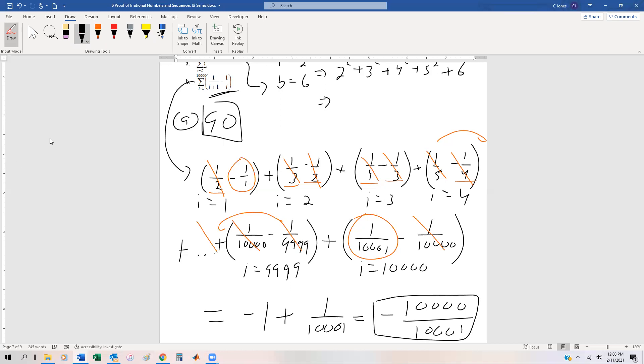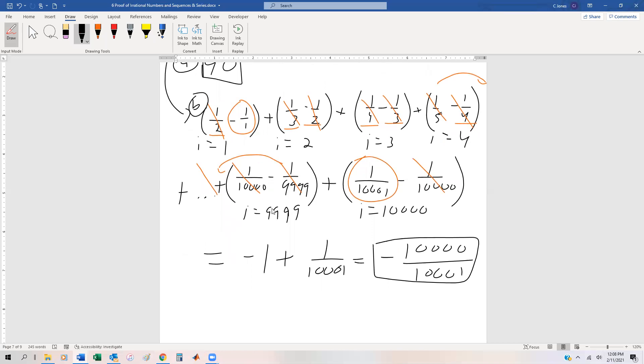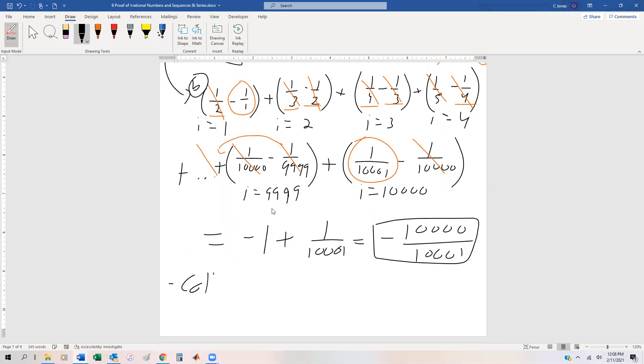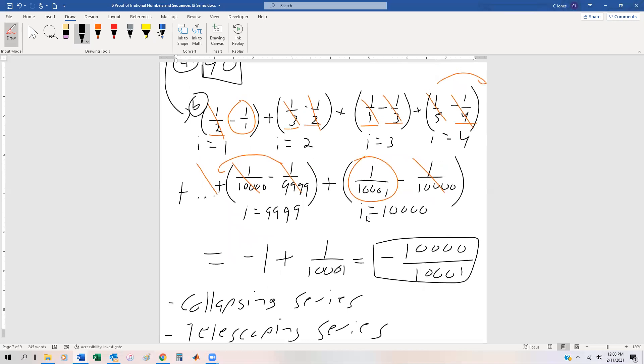So that type of series in which the terms cancel each other out is called either a collapsing series, and sometimes it's called a telescoping series. These types of series do come up quite often in discrete mathematics as a matter of fact.